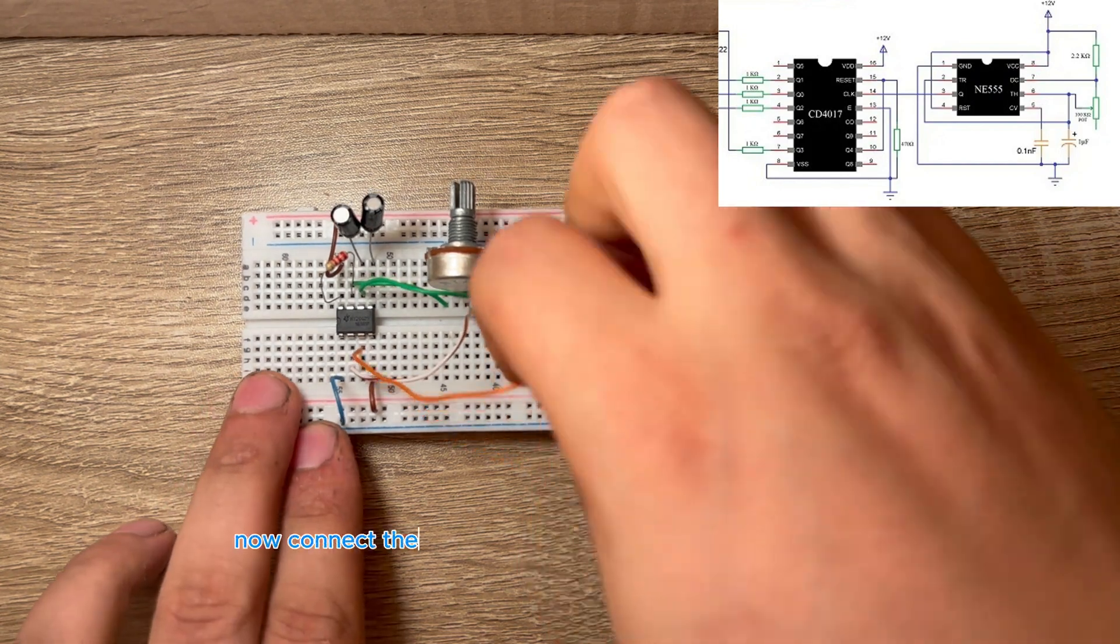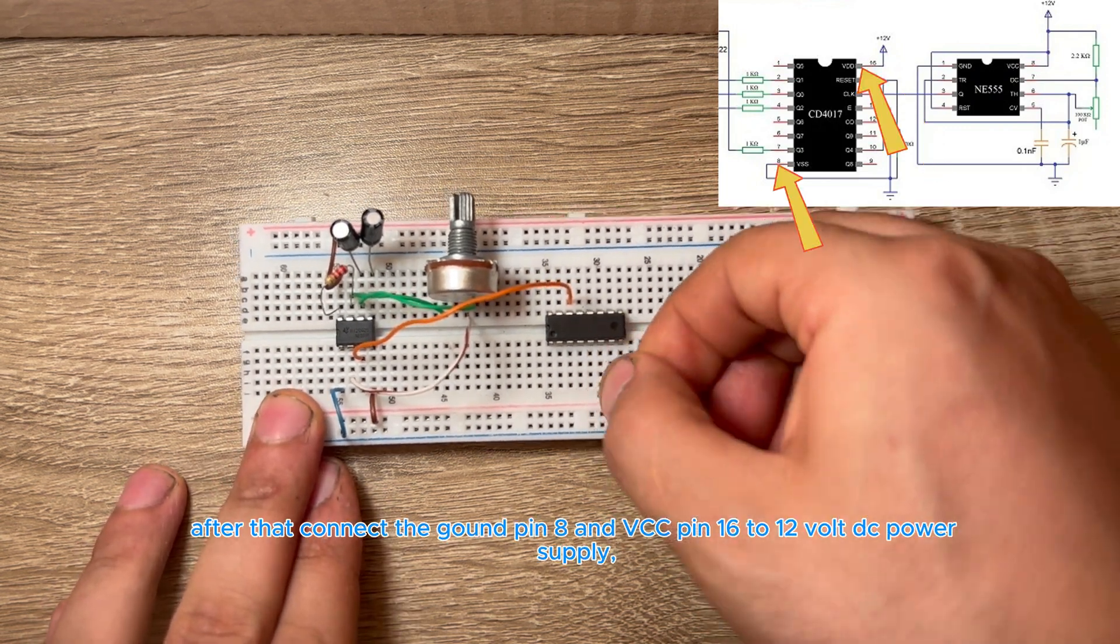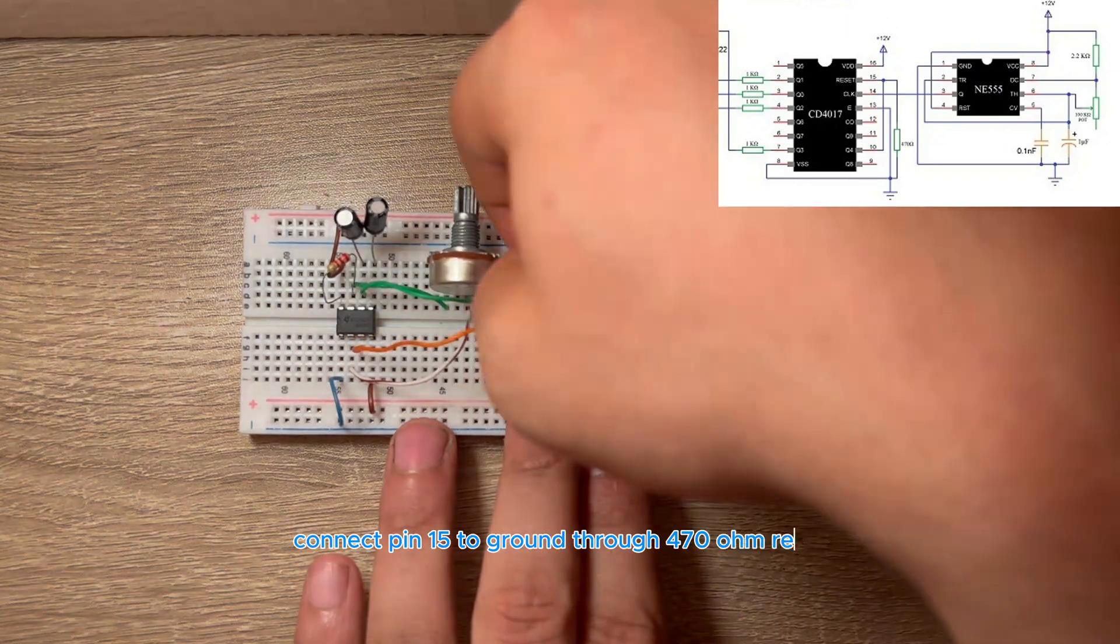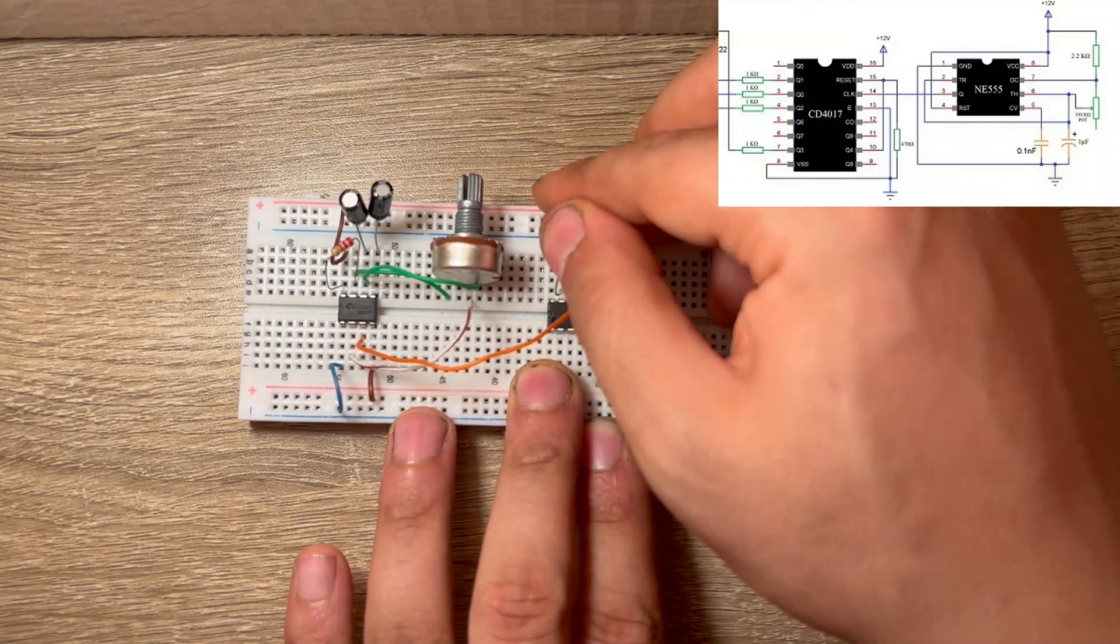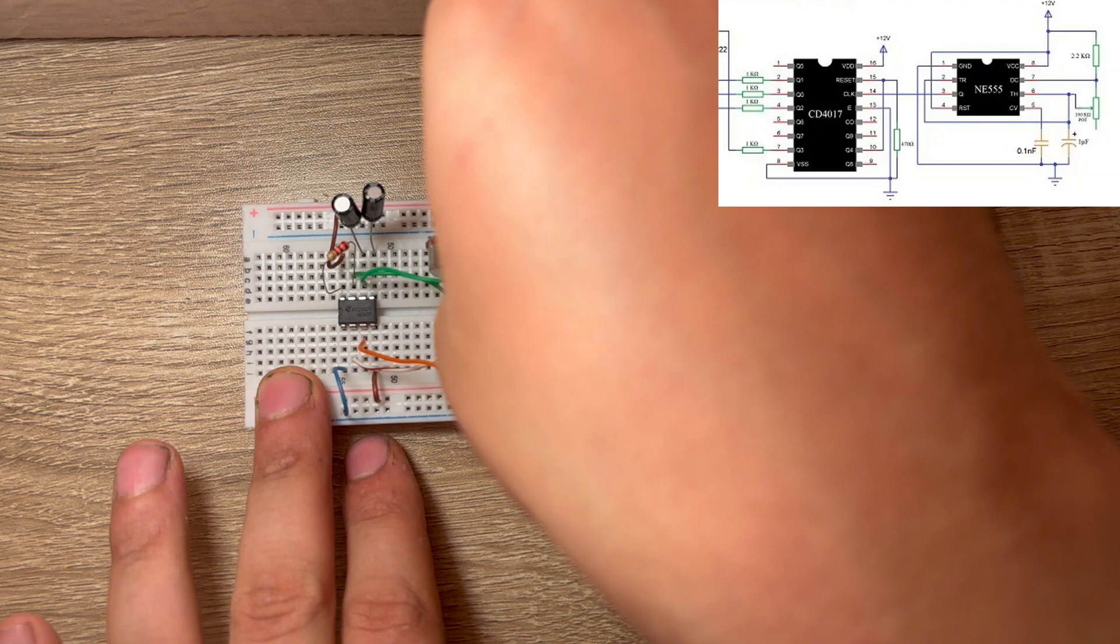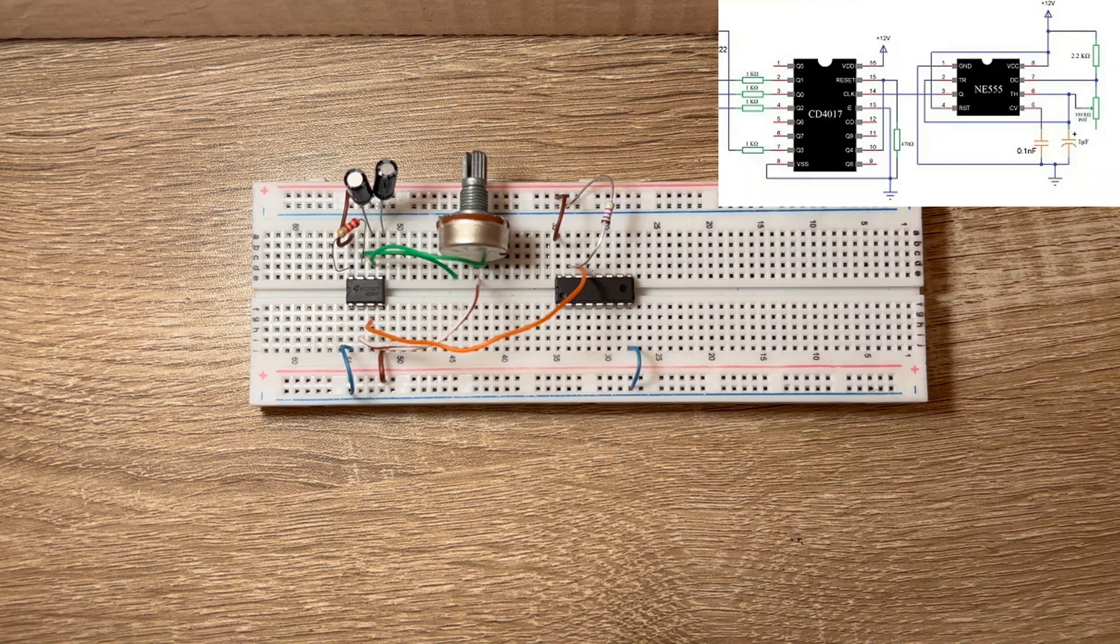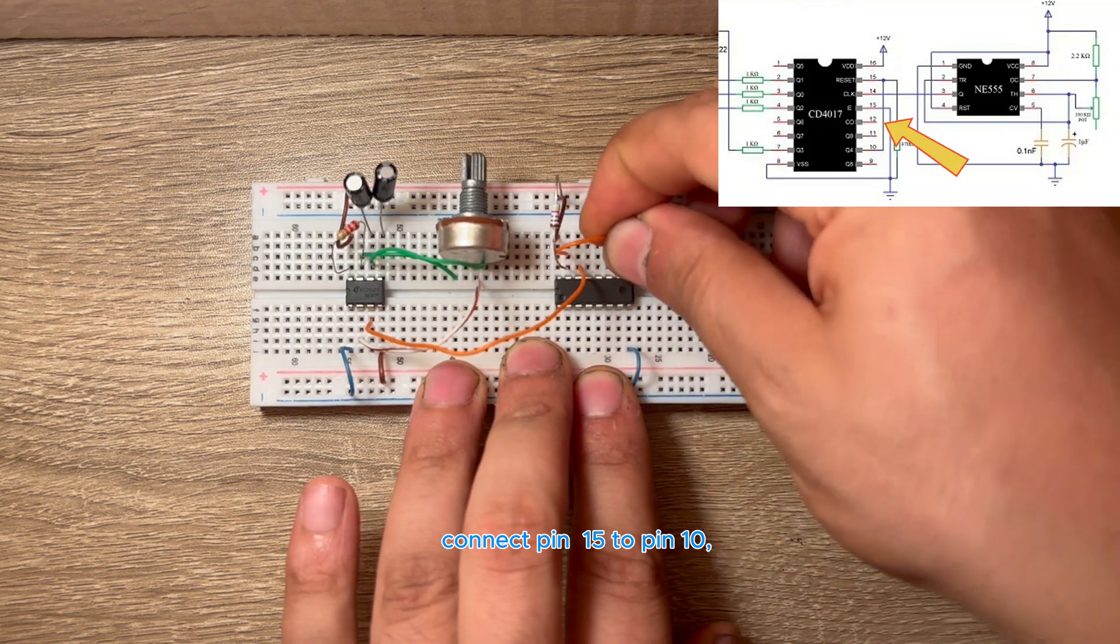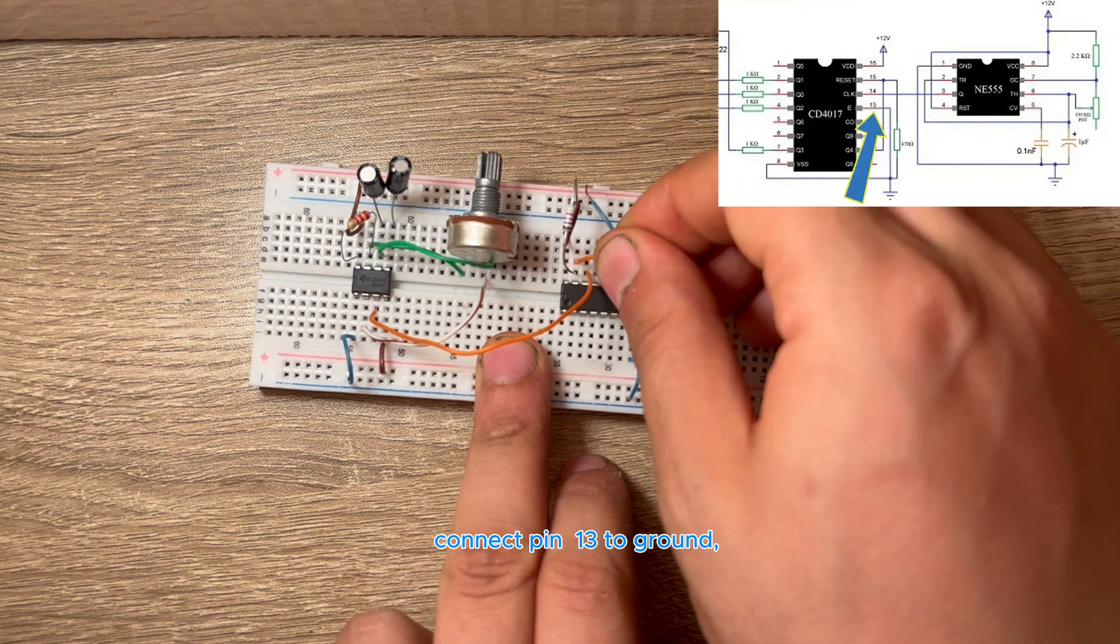Now connect the output of timer 555 to clock pin 14 of 4017 IC. After that, connect the ground pin 8 and VCC pin 16 to 12V DC power supply. Connect pin 15 to ground through 470 ohm resistor. Connect pin 15 to pin 10. Connect pin 13 to ground.